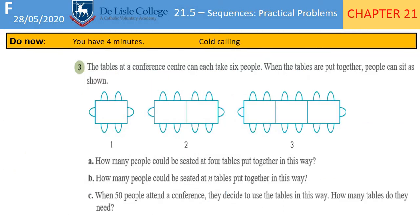Have a go at the table seating problem — pause the video as you do it. How many people could be seated at four tables put together? Counting the seats: one table seats 6, two tables seats 10, three tables seats 14. I can see I'm adding 4 each time, so four tables must be 18.